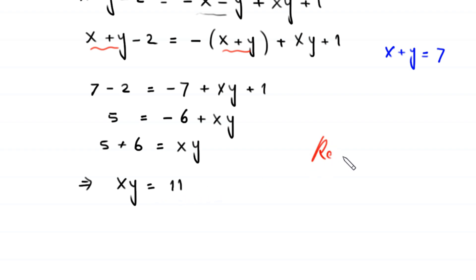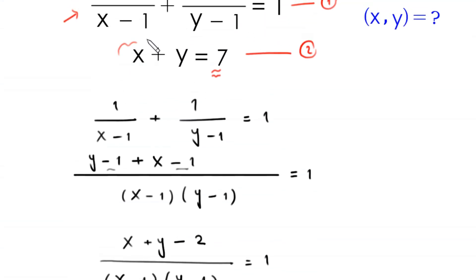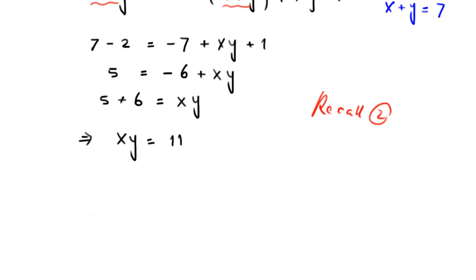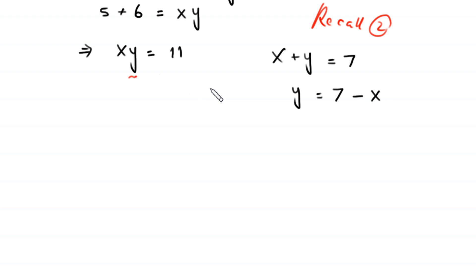Now we recall Equation 2: x plus y equals 7. From this equation, moving x to the right-hand side, y equals 7 minus x. We substitute this into the equation x times y equals 11, replacing y with 7 minus x.